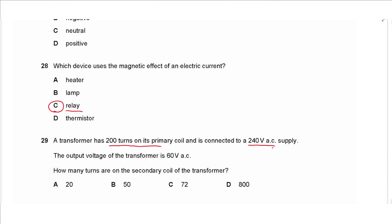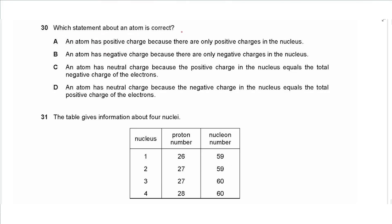Question 29 says a transformer has 200 turns on the primary coil and connected to a 240 volts AC supply. The output voltage of the transformer is 60 volts AC. How many turns on the secondary coil of the transformer? So we use Ns over Np is equal to Vs over Vp. So Ns is unknown, Np is equal to 200, Vs is 60, and Vp is equal to 240. By cross multiplication we multiply 200 by 60 and then we divide by 240. That will give an answer of 50 turns, so we choose B.